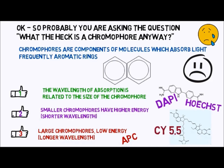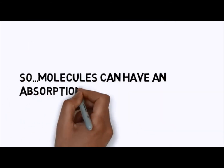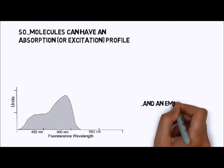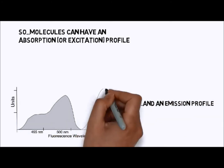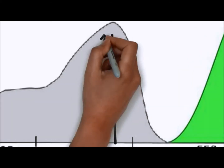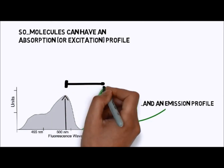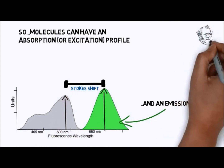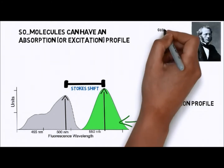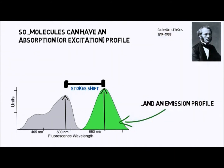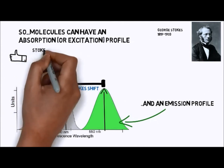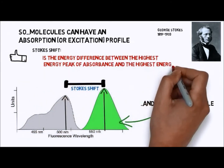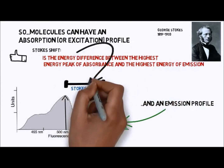Time for a review and some new information. Some molecules have an absorption profile that allows them to change states. If we draw a line at the point of each profile where there's a maximum, we would see two lines. The difference between the two maxima is called Stokes shift — named after George Stokes, who lived from 1819 to 1903. The Stokes shift is the energy difference between the highest energy peak of the absorbance and the highest energy of the emission peak. Our ultimate goal is to find fluorochromes where the Stokes shift is as large as possible, as this defines an excellent candidate for a fluorophore.